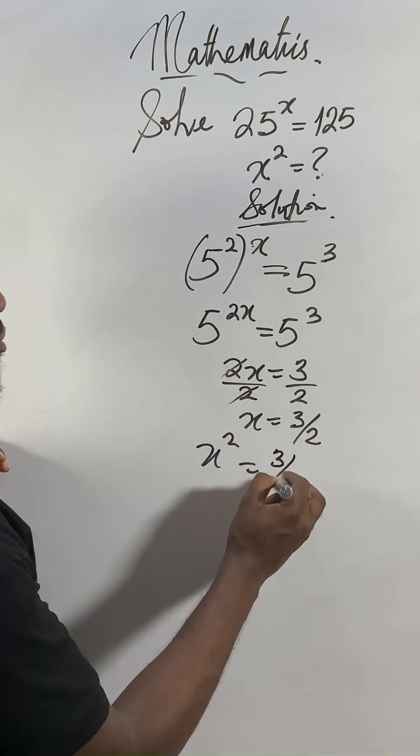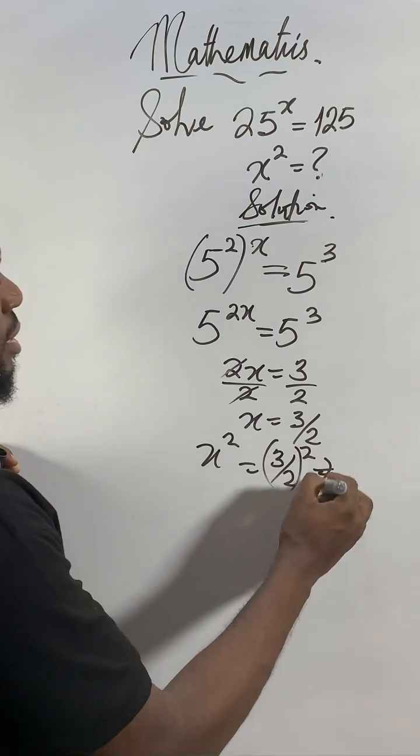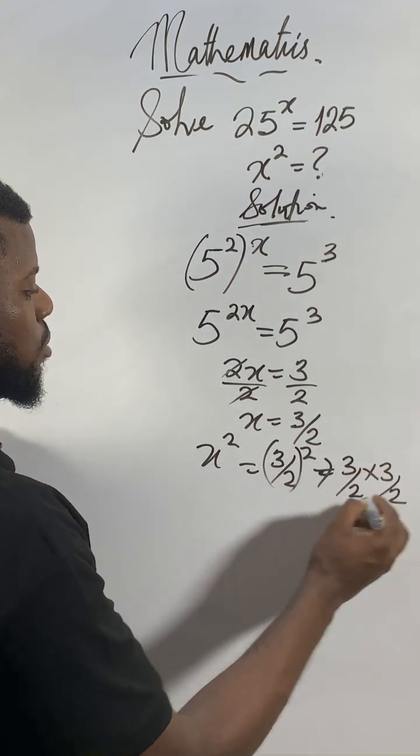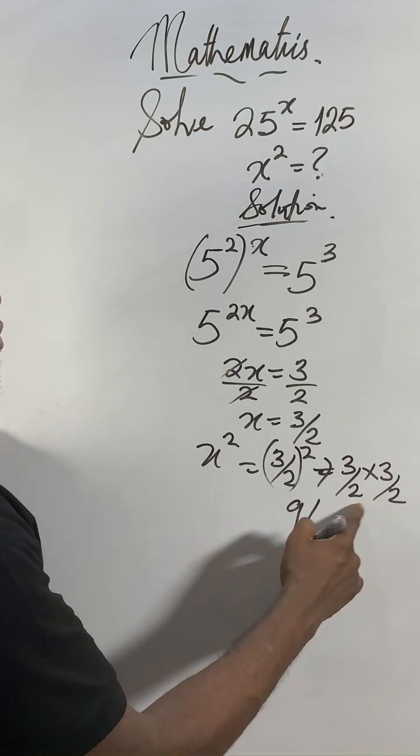This answer of x is 3 over 2, all squared. And anything squared means that thing 2 times, it means 3 over 2 times 3 over 2. 3 times 3 is 9 over 2 times 2 is 4.